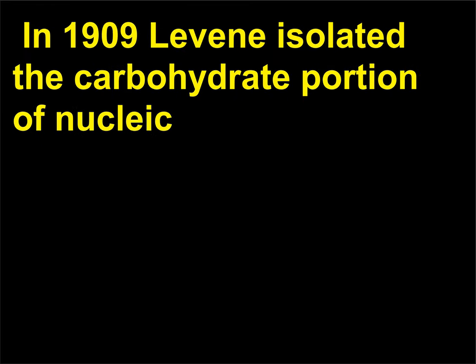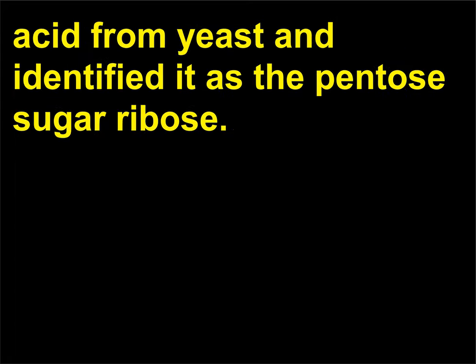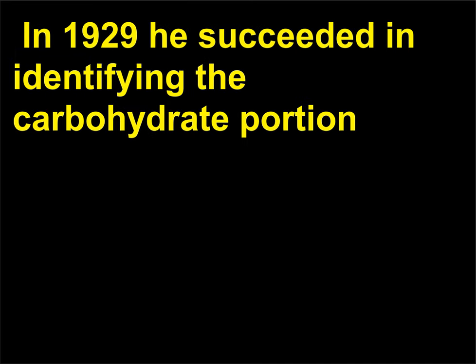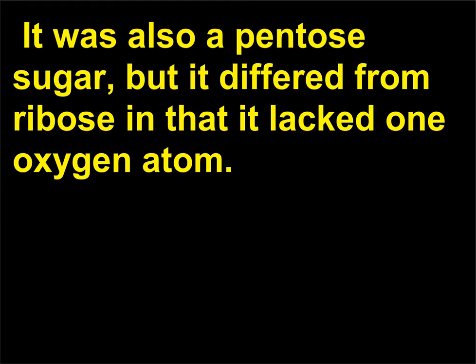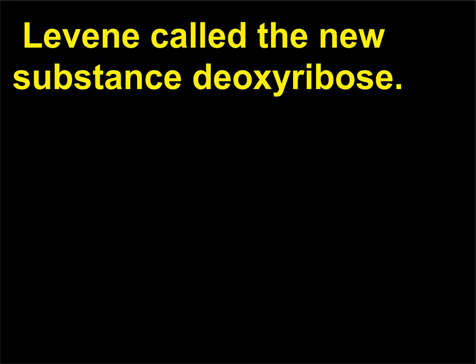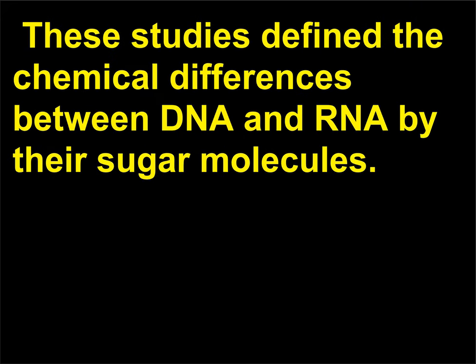In 1909 Levine isolated the carbohydrate portion of nucleic acid from yeast and identified it as the pentose sugar ribose. In 1929 he succeeded in identifying the carbohydrate portion of the nucleic acid isolated from the thymus of an animal. It was also a pentose sugar, but it differed from ribose in that it lacked one oxygen atom. Levine called the new substance deoxyribose. These studies defined the chemical differences between DNA and RNA by their sugar molecules.